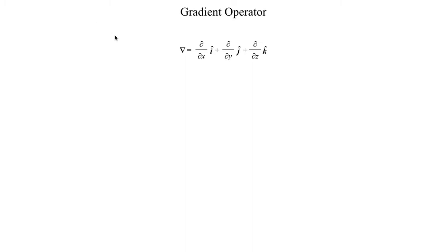The gradient operator is defined as what's up on the screen here. You have a partial with respect to x in the i-hat direction, or in the zonal direction, or in the x direction; a partial with respect to y taken in the j-hat direction, or the meridional direction, or the y-axis direction; and then also a partial with respect to z, which is taken in the vertical direction.